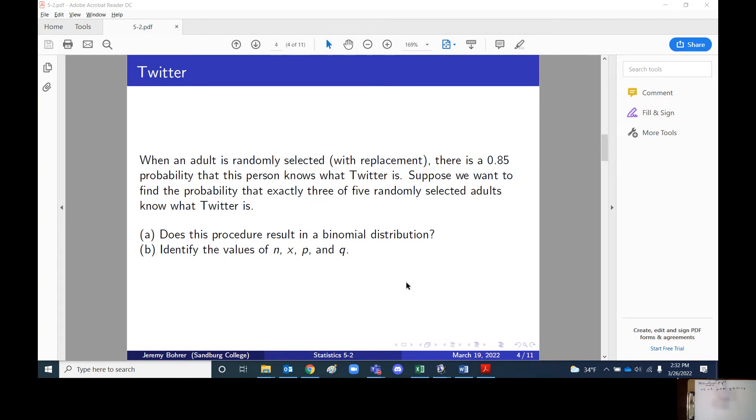Moving on, we also want to identify the values of n, x, p and q. In this case, n is the number of trials, so that's five. X is the number of successes that we want, which is three.